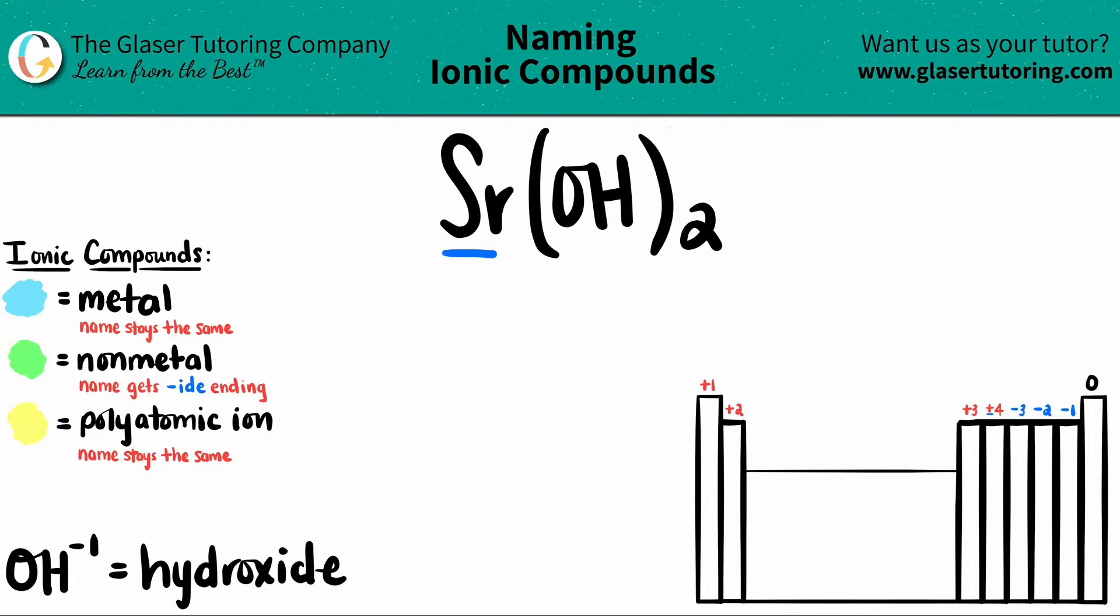In this case, we have strontium, which is Sr, O for oxygen, and H for hydrogen. So I know that I have at least one polyatomic. And remember guys, polyatomics are never going to be on the periodic table. They're always going to be memorized. So I just wrote out the one that we're going to be seeing here. OH, which is always a minus one charge, you should always memorize the charge as well.